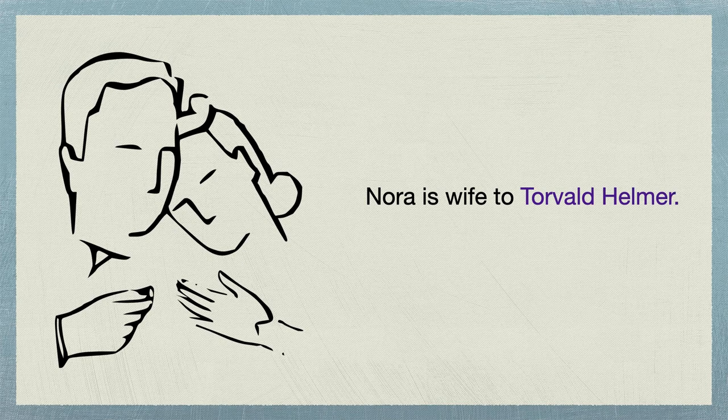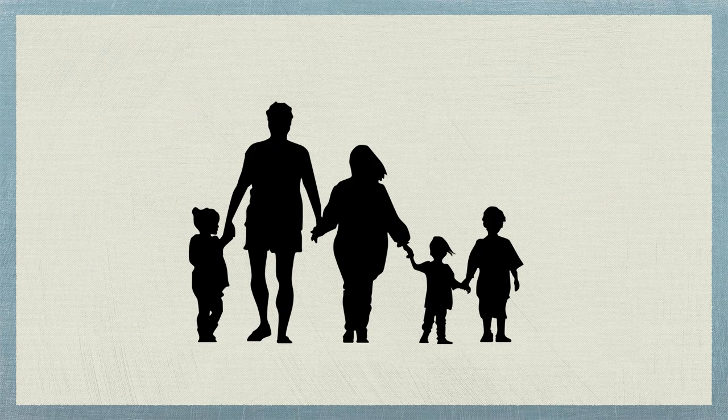Nora delights in her husband Helmer's new position at the bank, just as he delights in his position of authority. As a husband, he treats Nora like a child in a manner that is both kind and patronizing. Nora and Torvald have three children whose names are Eva, Bobby, and Emmy.